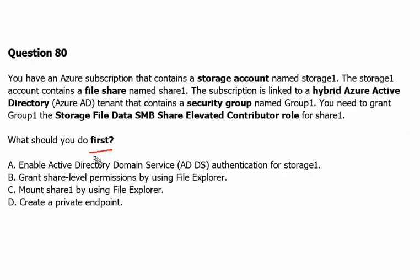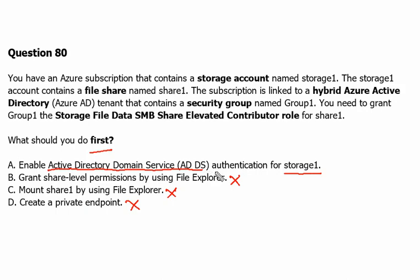Option D says to create a private endpoint — there was no such requirement in the prerequisites. Option C, mount share one using File Explorer — not mentioned as a prerequisite. Option B, grant share-level permission by File Explorer — also not mentioned. Option A is enable Active Directory Domain Services authentication for storage one, which is what we need to enable identity-based access for Active Directory users and groups. So option A is the correct answer.